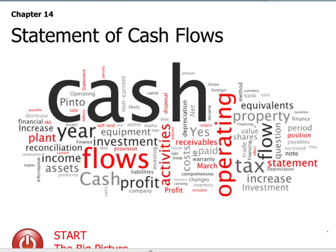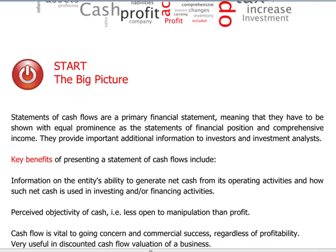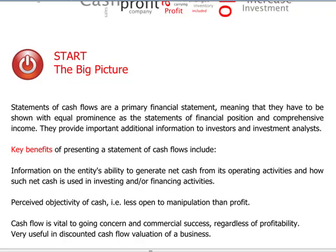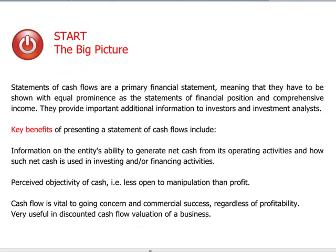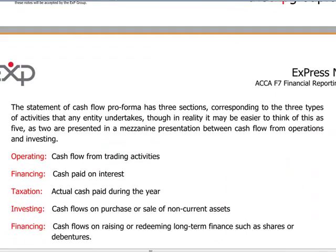Hello and welcome to the last Express video relating to ACCA paper F7. We will be discussing the statement of cash flows, which is the primary financial statement that reflects only the cash generating capability of the company. The cash flows will be presented based on three categories: operating, financing, and investing activities.